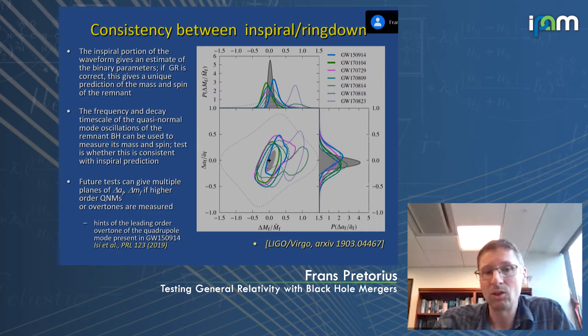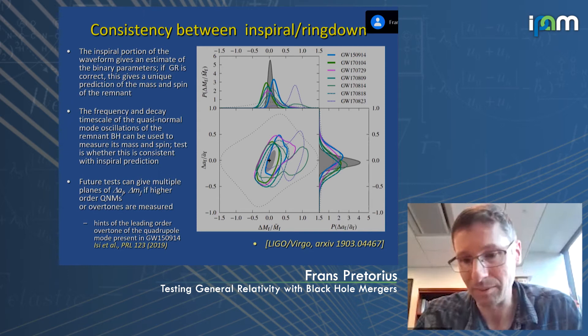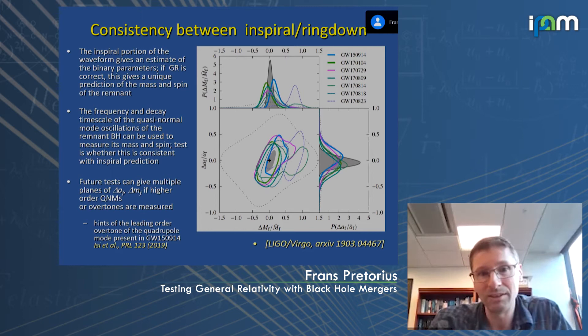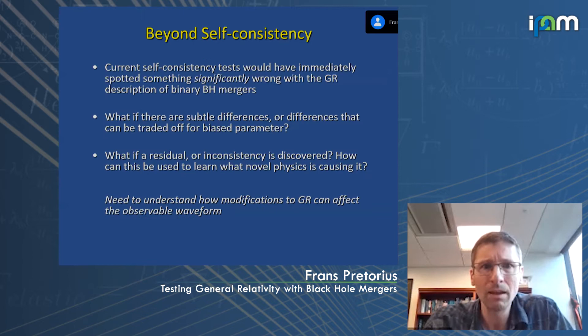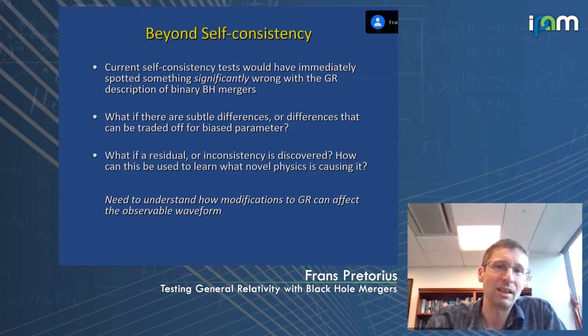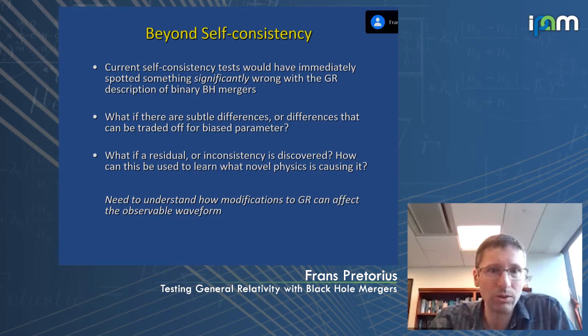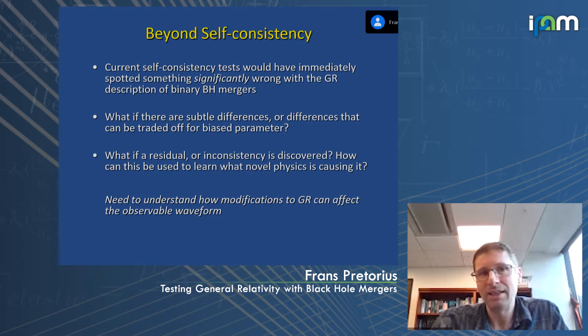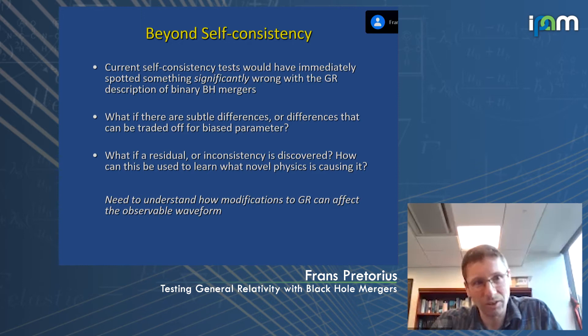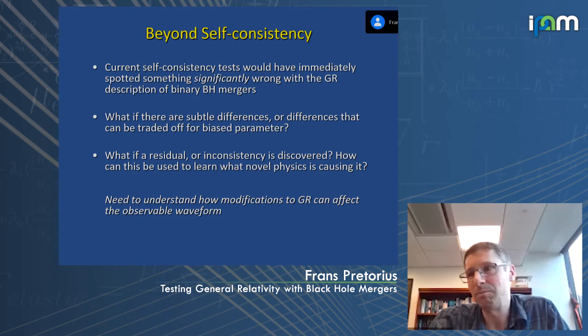There has been a claim that the first overtone of the leading quadrupole mode is also observable in the data, giving quantitative evidence that general relativity is correct and these are Kerr black holes colliding. A consequence of the final state conjecture is that we won't learn anything new about the physics of black holes with ever more detections or ever higher signal-to-noise ratios — we'll learn about astrophysics of black holes, but if the only black holes are Kerr, we pretty much know everything already.